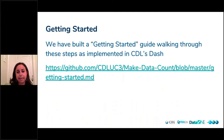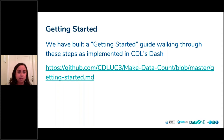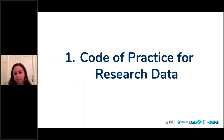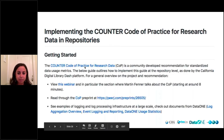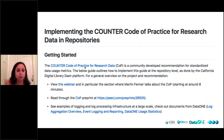We built a getting-started guide, available on our GitHub, and all links are available from our makedatacount.org website. The first step is the Code of Practice for Research Data. Many of you are familiar with COUNTER because you use it for other scholarly outputs. We wrote a COUNTER Code of Practice for Research Data with COUNTER, which they recently formally endorsed — so now it's their first code of practice not related to articles, but related to data. It's on their website and we do point to COUNTER's website as they'd like to collect all feedback there.